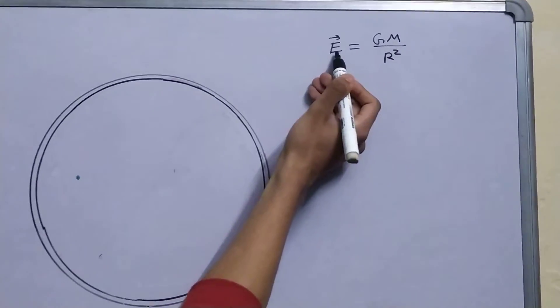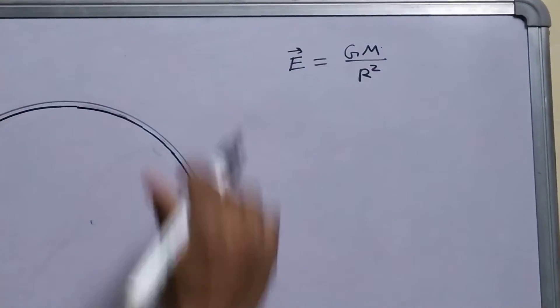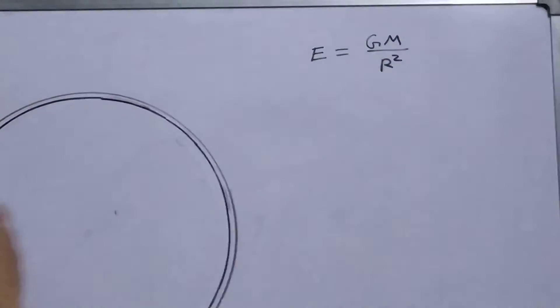This is the gravitational field produced due to m at some distance r, just considering the magnitudes, we can find out the directions.